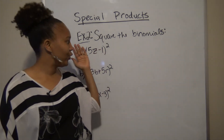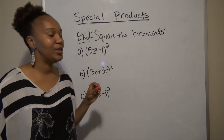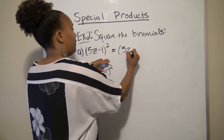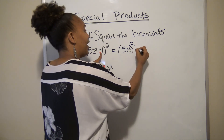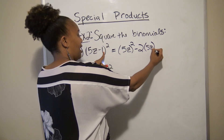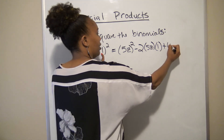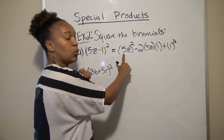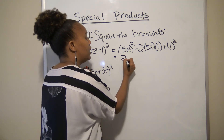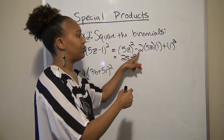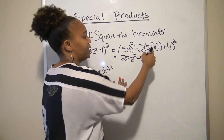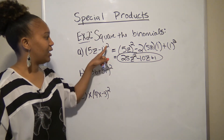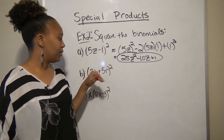For example two, part a, we want to square (5z − 1). Using the shortcut: the first term squared is (5z)² = 25z², since it's a minus we get minus 2 times the first term times the second term, which is −2 × 5 × 1 = −10z, plus the second term squared which is 1² = 1. So (5z − 1)² = 25z² − 10z + 1.